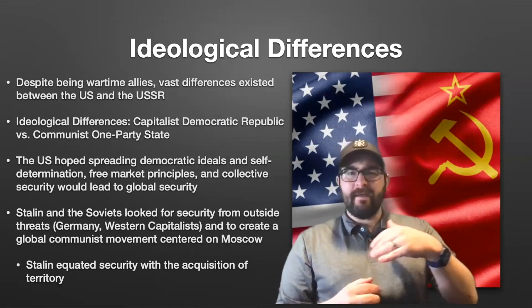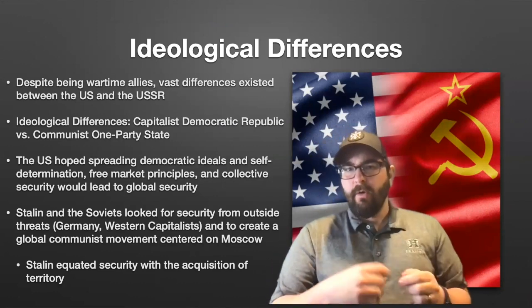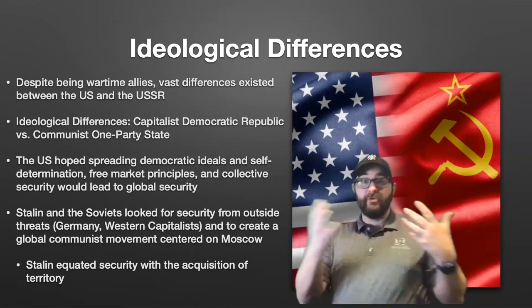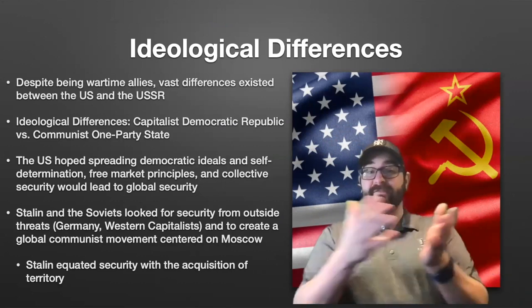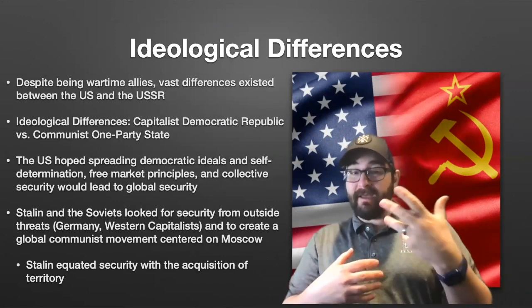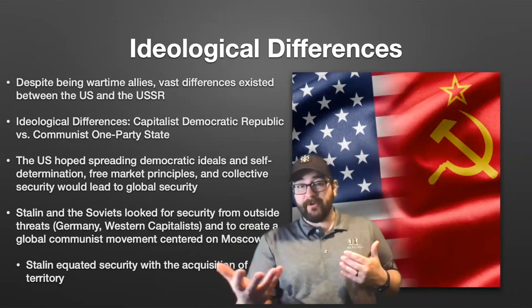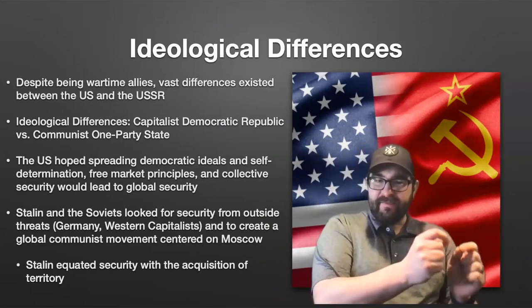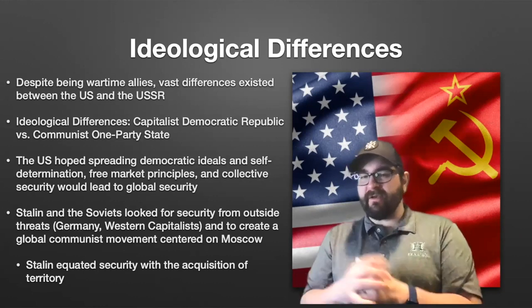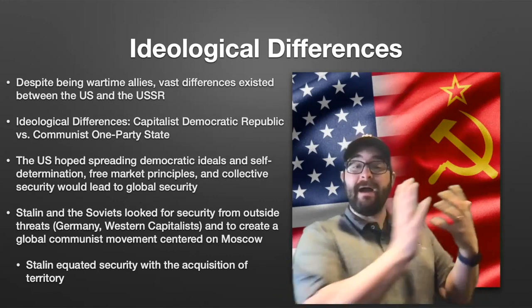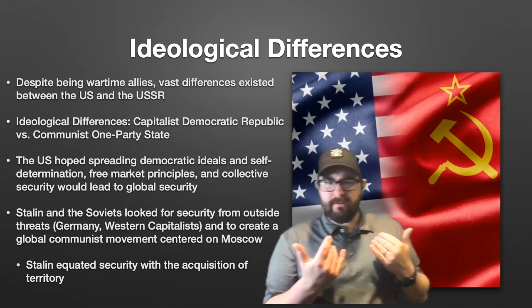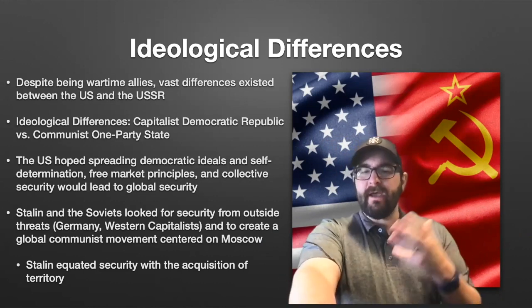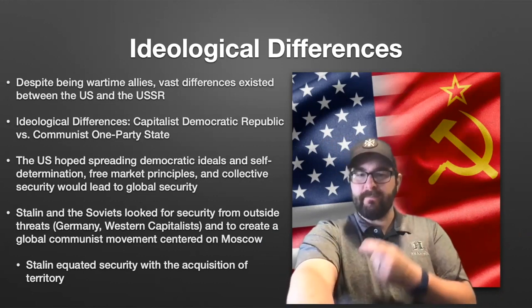The United States is a capitalist democratic republic, while the Soviet Union is a communist one-party state. The United States hoped in a post-war world to spread democratic ideals and self-determination, free market principles of capitalism, and collective security that would lead to overall global security, while Stalin and the Soviet Union saw that security coming through the acquisition of territory. They wanted security from outside threats like Germany, which had invaded the Soviet Union twice, and other Western capitalists that the Soviet Union didn't trust, and also to create a global movement of communism centered on Moscow.